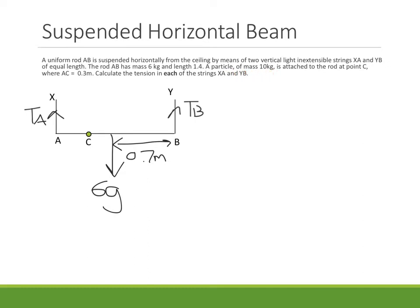Then we've got a particle of mass 10 kilograms attached at C. So coming down from C, we've got 10G, and we're told that AC is 0.3. So from here to here is 0.3. So now we're ready to do a few equations to start working out the tension in each of the strings.